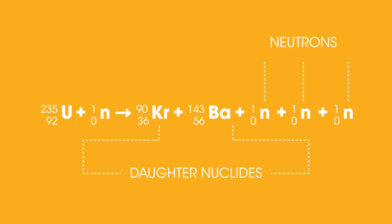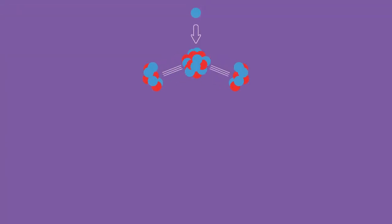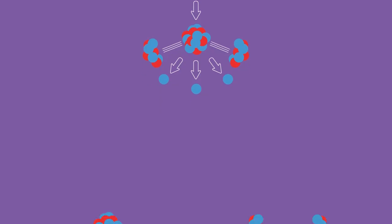An atom of uranium will rarely undergo fission without first capturing a neutron. So then where does the energy that Hahn and Meitner referred to come from?